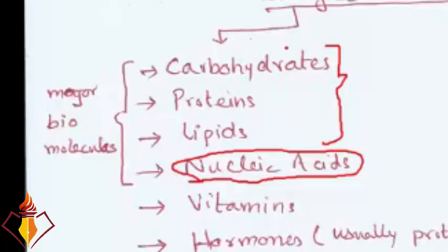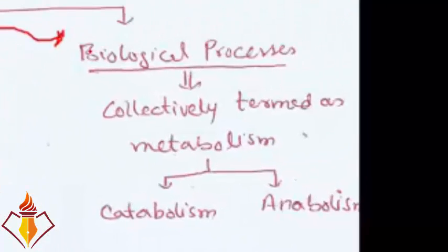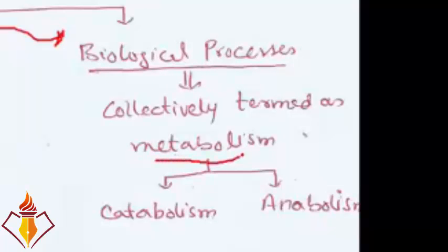All the biological processes happening in living organisms or in the human being are collectively termed as metabolism. Metabolism can further be classified into two categories: catabolism and anabolism. Catabolism is the breaking down of larger molecules into smaller molecules, while anabolism is the combining of smaller molecules to make larger molecules.